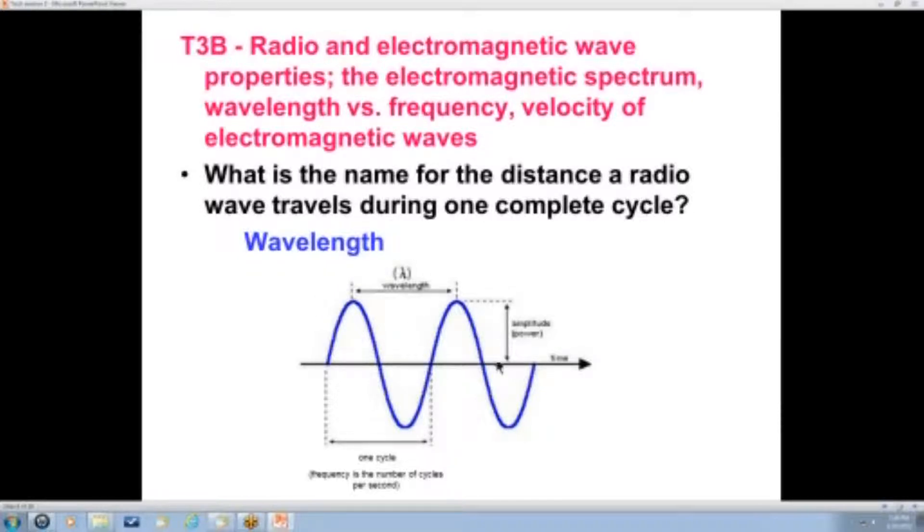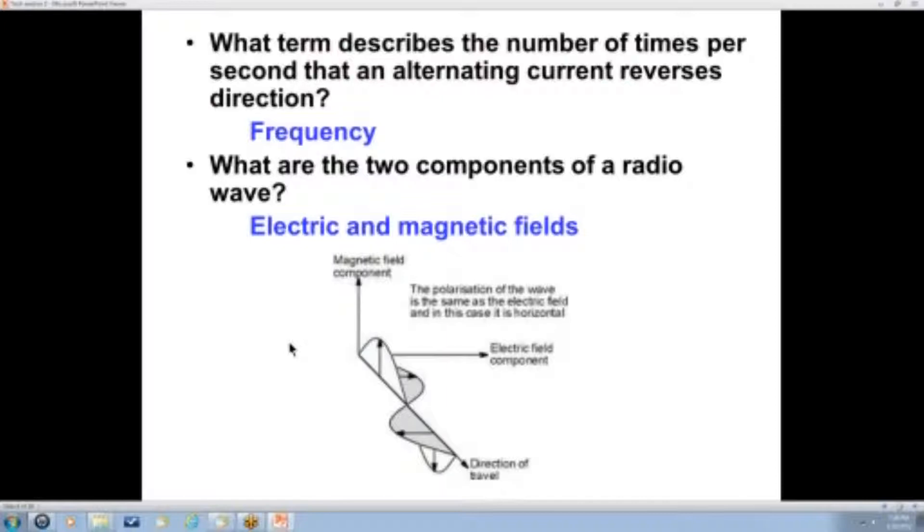And the other thing is that the vertical here reflects the amount of power that's in the wave. What term describes the number of times per second that an alternating current reverses direction? That's not quite technically correct for this answer, but this is the test answer, so I'll learn it. It's frequency. The number of times per second, the number of cycles per second is called the frequency.